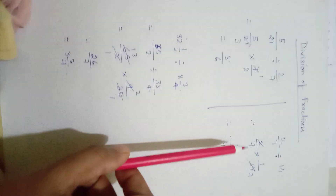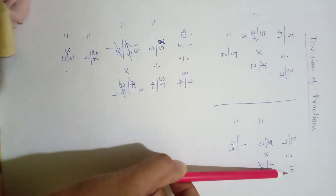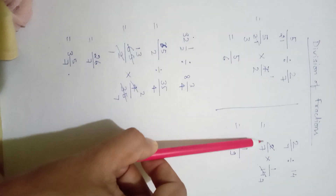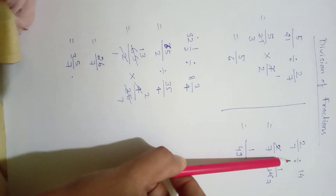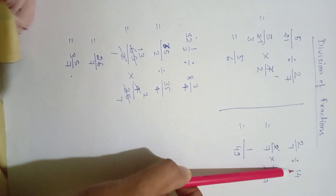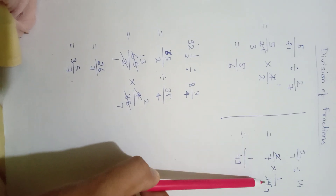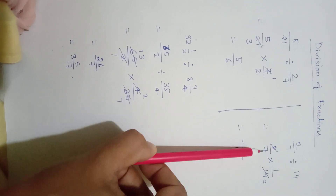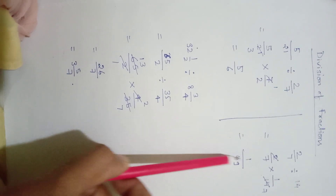Another example: 2 by 7 divided by 14. Since 14 has no fraction it means there is 1, so the first fraction is written as it is — 2 by 7. Division is converted into multiplication and the reciprocal of 14 is 1 by 14. We cancel: 2 and 2 cancel, 7 and 14 cancel to give 1 and 7. Now this cannot be cancelled further, so we multiply: 1 by 1 gives 1, and 7 by 7 gives 49. The answer is 1 by 49.